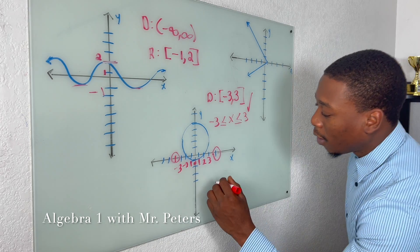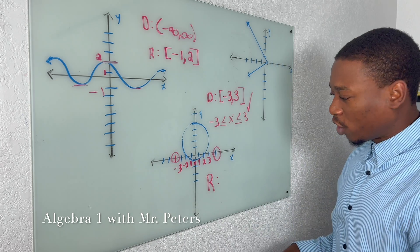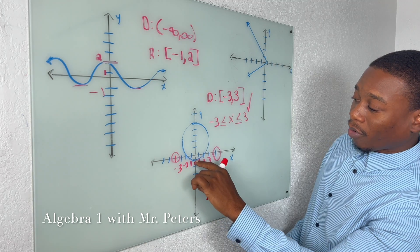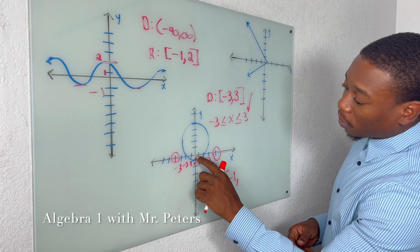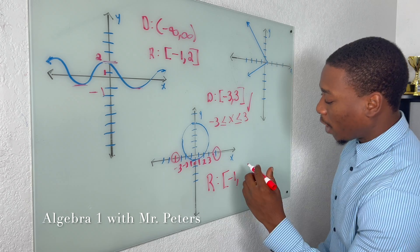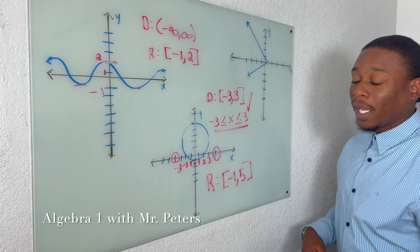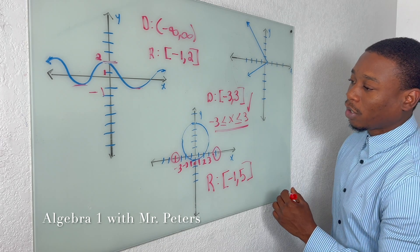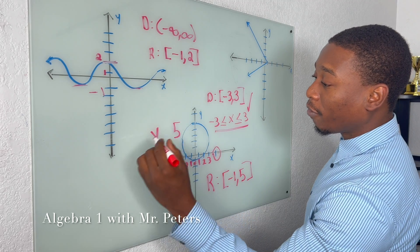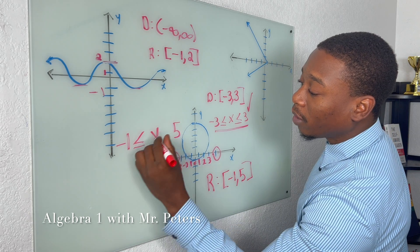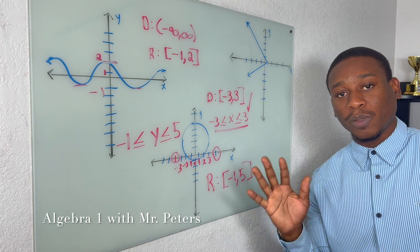When we get to the range, it's the same exact thing, but instead of moving left to right, we're moving bottom to top. The lowest part of the graph is when y is negative one, and it goes up to five, which is the highest point and is included. So the range in interval notation is bracket negative one, comma, five, bracket. Written as a compound inequality, we put negative one less than or equal to y, which is less than or equal to five. Make sure you know both expressions.